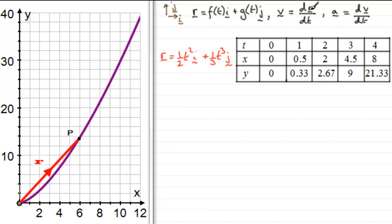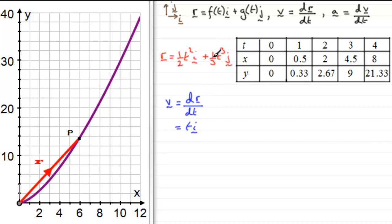To get v we differentiate r with respect to t. Differentiating the i component: half times the power 2 gives 1, and reducing the power by one gives simply t in the i direction. For the j component: one third multiplied by power 3 gives 1, and reducing the power gives t squared in the j direction. So the velocity is v equals ti + t²j.